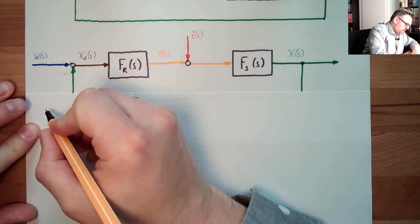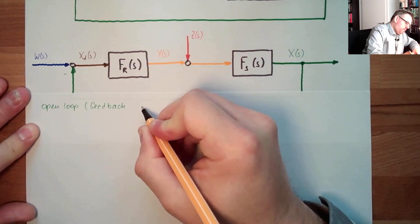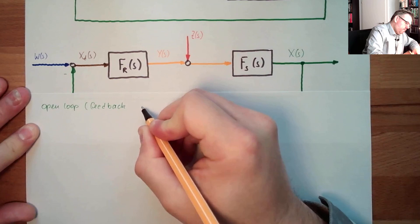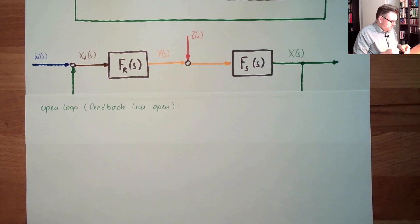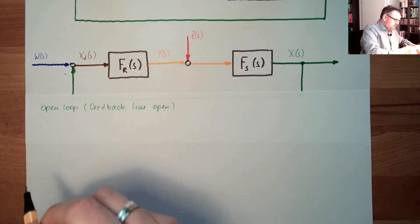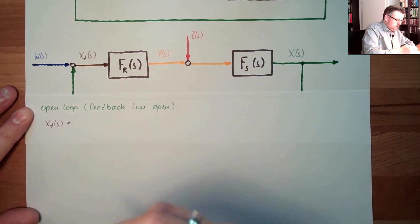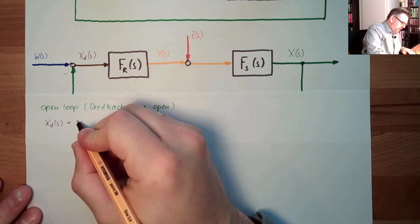We are calculating the open loop transfer function — open loop, feedback line open. Let's start at the left side. So what is our xd(s)? Our xd(s) equals, since there is nothing coming back, equals our w(s), our reference variable.